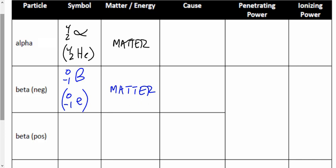Beta positive, or beta-plus, has the symbol 0, +1 beta, also written as 0, +1 E — not P, because P is the symbol for a proton. This isn't exactly an electron; it's a positron. And here's the trick: it's not matter or energy — it's antimatter.